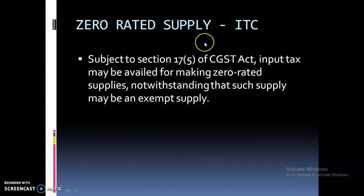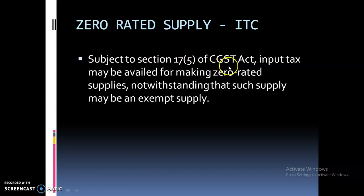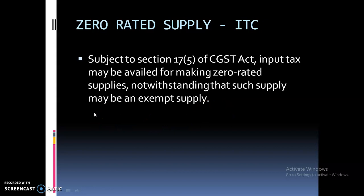Zero rated supply aur ITC ka kya relation hai? Subject to Section 17(5) of CGST Act — Section 17(5) means blocking of credit, jisme jo diya gaya hai us pe aap ITC claim nahi kar sakte — input tax may be available for making zero rated supply, notwithstanding that such supply may be an exempt supply. Means zero rated supply pe aap jo bhi input use karte ho, us saare input ki aap credit le sakte ho. Agar aap exempt supply karte ho to proportionate input tax credit reverse karni padti hai, lekin zero rated supply mein yeh laagu nahi hota, kyunki zero rated supply is different from an exempt supply.